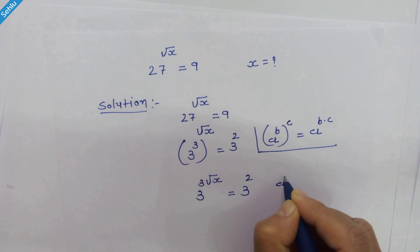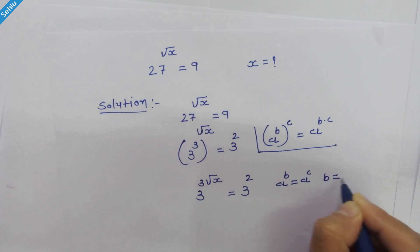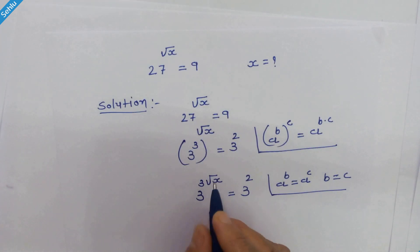If we have a raised to b equals a raised to c, then we can equate b equals c. Here we have the same base on both sides, so we can equate the exponents.